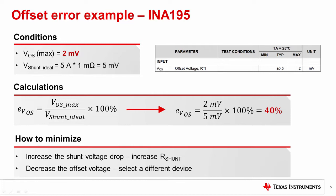There are two possible ways to approach this. First, you can increase the shunt voltage, which means increasing the shunt resistance. Second, you can decrease the offset voltage, which requires selecting a different device. Increasing the shunt resistance may or may not be feasible due to cost, board space, or power dissipation concerns.